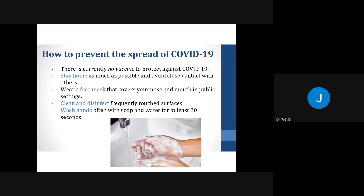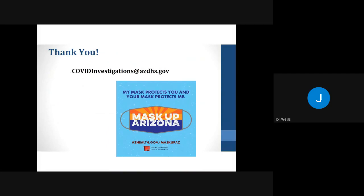Finally, it is important to understand how we can help stop the spread of COVID-19, especially since there is currently no vaccination to protect against the disease. Recommendations include staying home as much as possible and avoiding close contact with others, wearing a face mask that covers your nose and mouth in public settings, cleaning and disinfecting frequently touched surfaces, and washing your hands often with soap and water for at least 20 seconds. Thank you very much for listening to this presentation. If you have any questions, please feel free to reach out to the COVID investigation team at covidinvestigations@azdhs.gov.